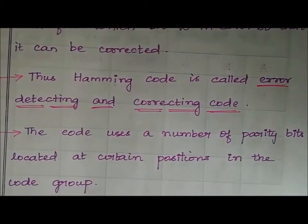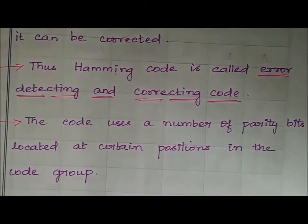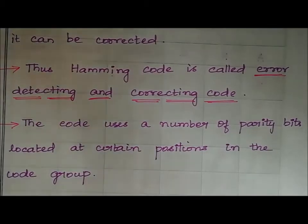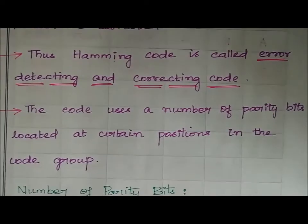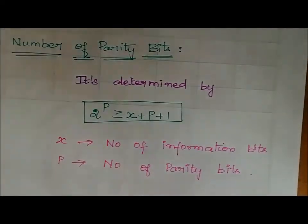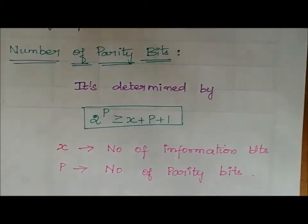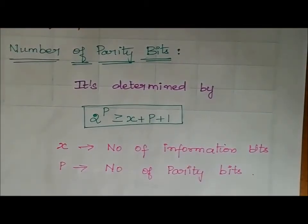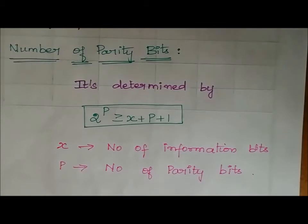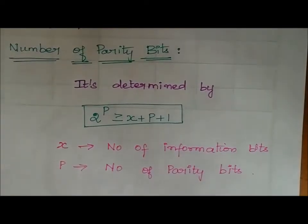The Hamming code uses a number of parity bits located at certain positions in the code word. The number of parity bits is determined by the formula: 2^p ≥ x + p + 1, where x equals the number of information bits and p equals the number of parity bits.